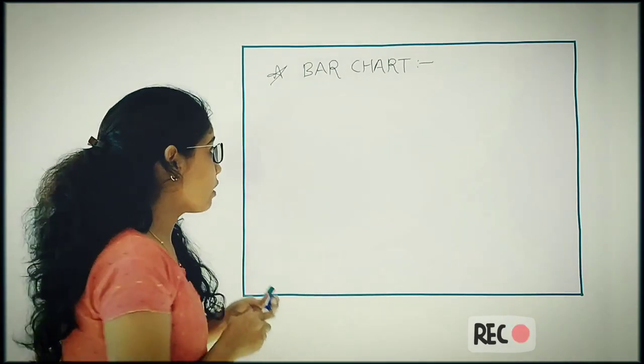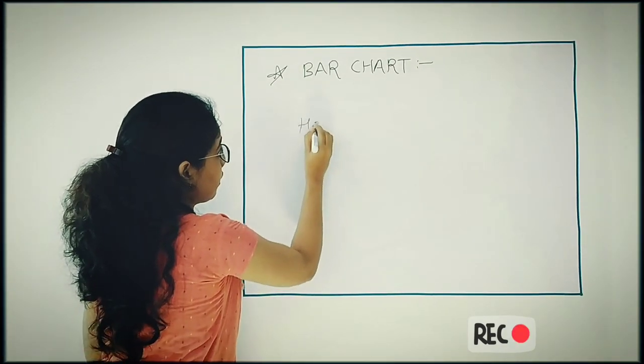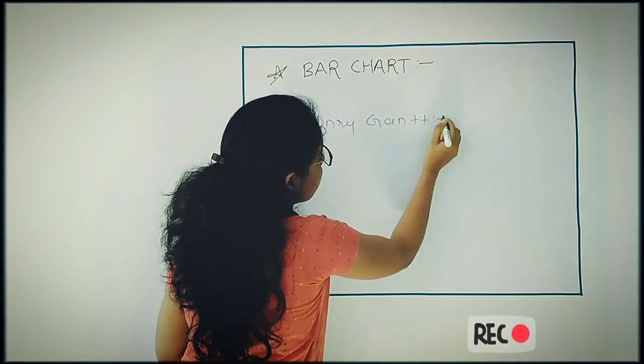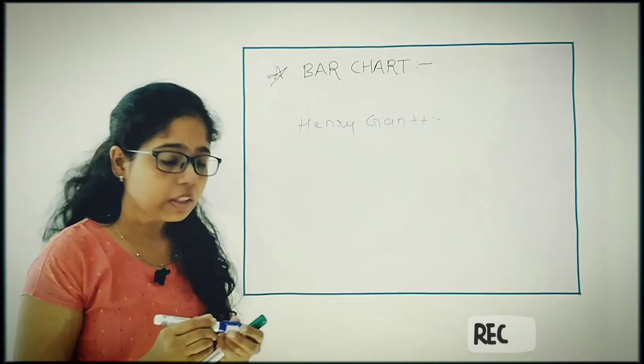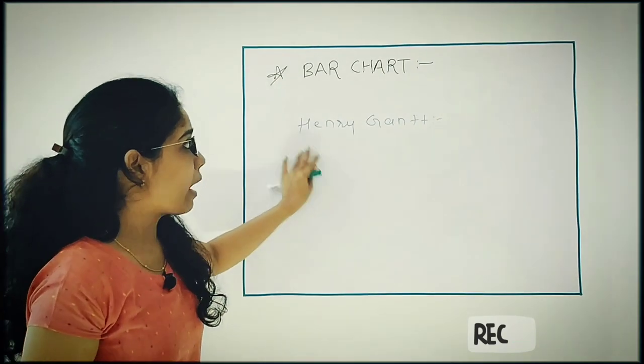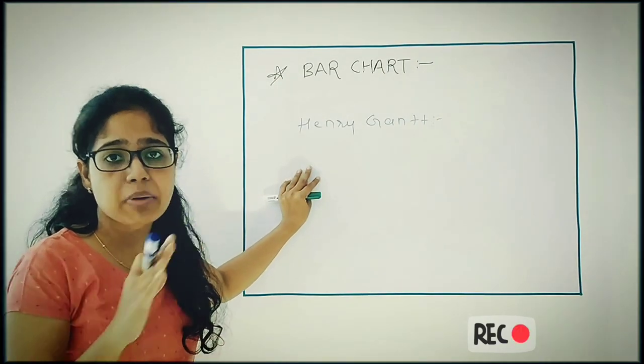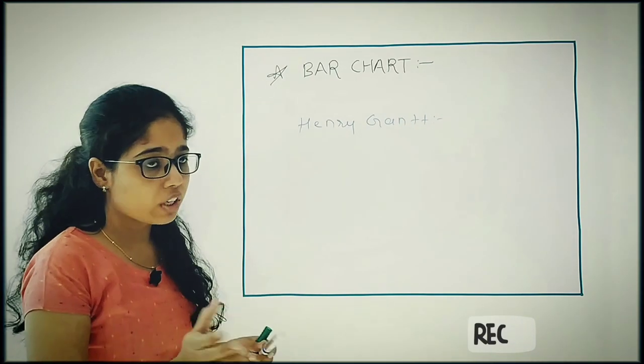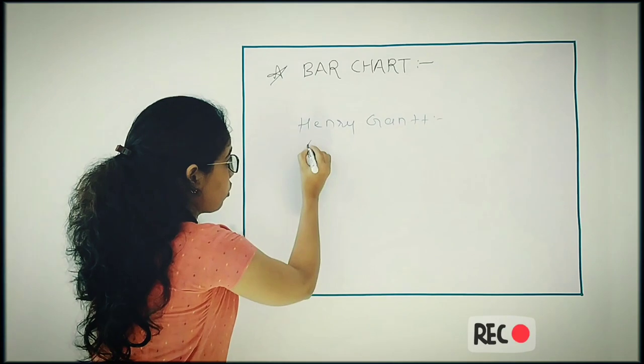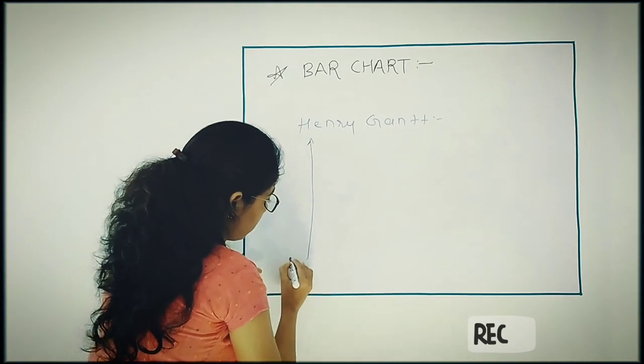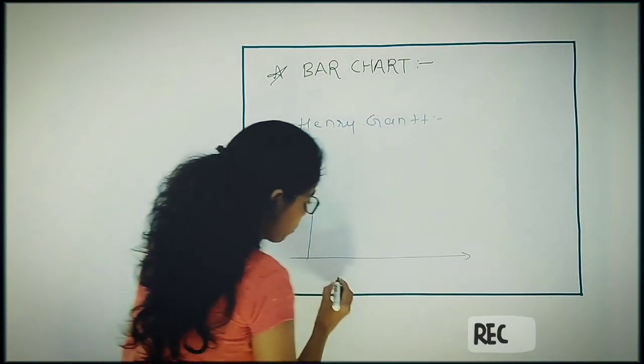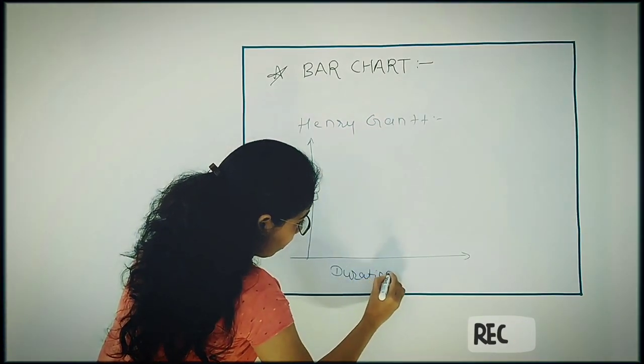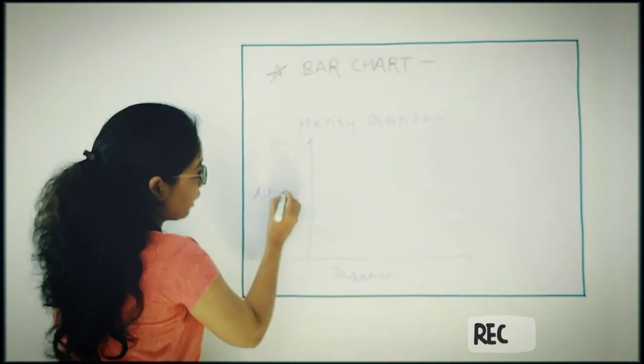This bar chart was given by Henry Gantt, that's why it is also called a Gantt chart. This bar chart is represented on simple graph paper, taking all the activities on the y-axis and duration on the x-axis. So suppose this will be your duration on the x-axis.